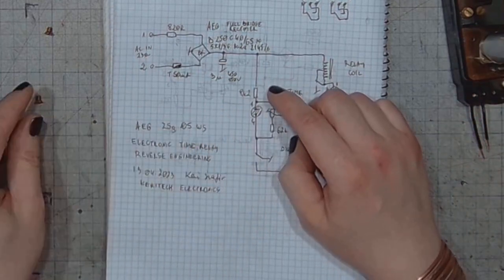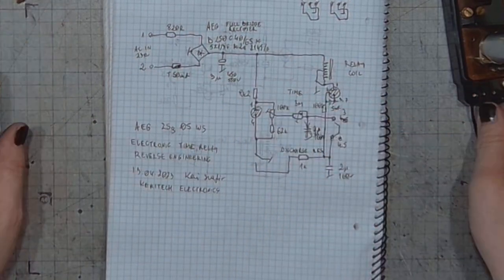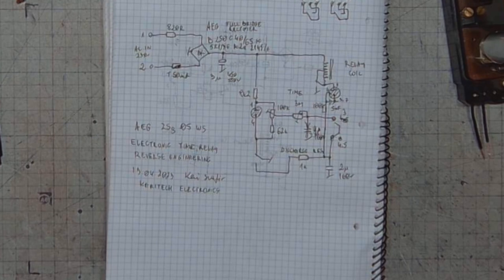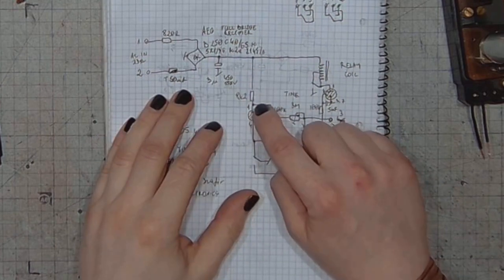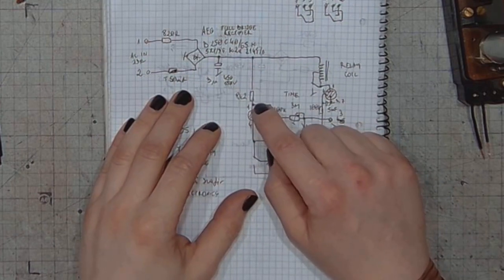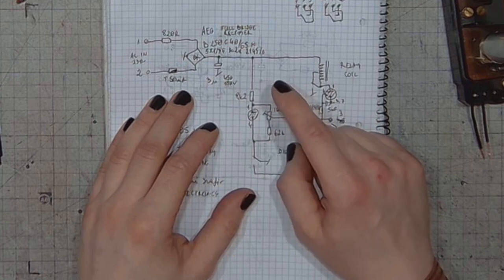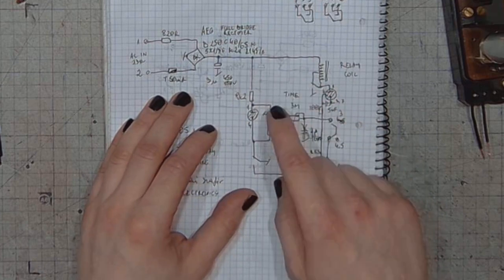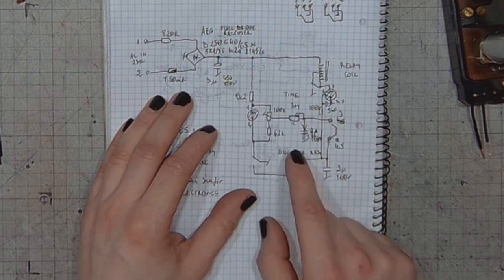And at the initial state, the current flows through the 8.2k resistor here and the voltage regulator tube to the ground, limiting the voltage on the plate. I don't know the exact value yet, but I will measure it.